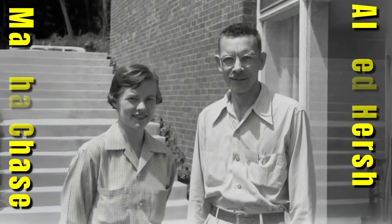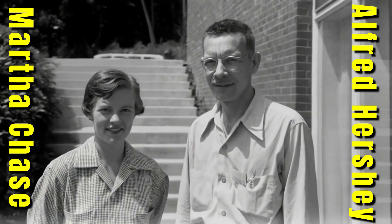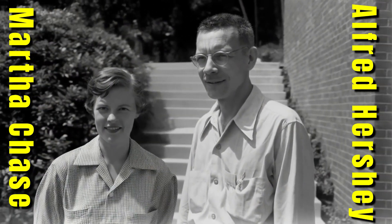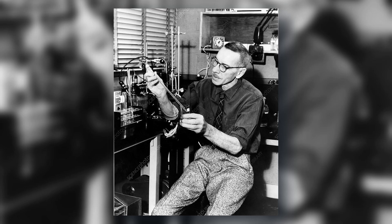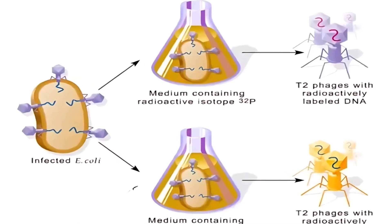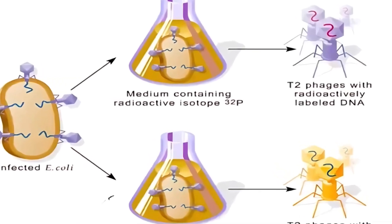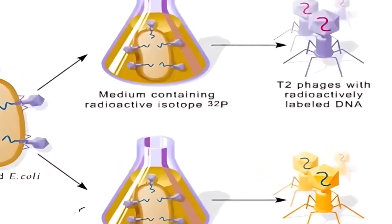In 1952, Alfred Hershey and Martha Chase performed a clever test using viruses. They labeled protein with one dye and DNA with another, then watched which one entered bacteria. Only DNA went inside, proving it carried genetic instructions. At last, the evidence was undeniable. DNA was the code of life.